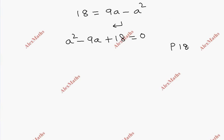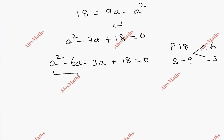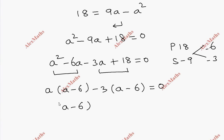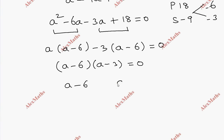Now factoring: product is 18, sum is minus 9. Splitting the middle term using minus 6 and minus 3: a squared minus 6a minus 3a plus 18 equal to 0. Factoring: (a minus 6)(a minus 3) equal to 0. So a equals 6 or a equals 3.